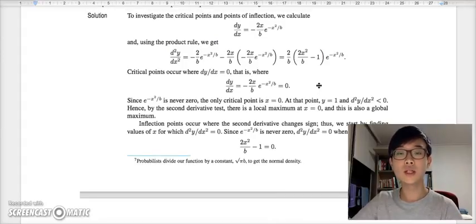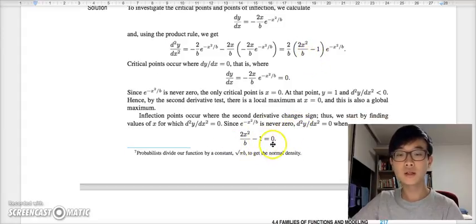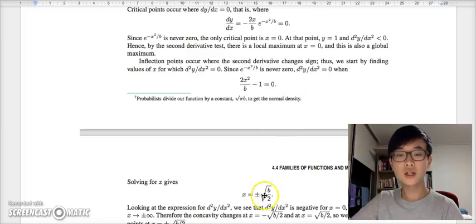Now, let's take a look at inflection points. Inflection points occur when the sign of the second derivative changes. When this always remains positive, this is a constant. So we should take a look at this. This equals 0. When you solve this equation, x equals plus or minus sqrt(b/2).